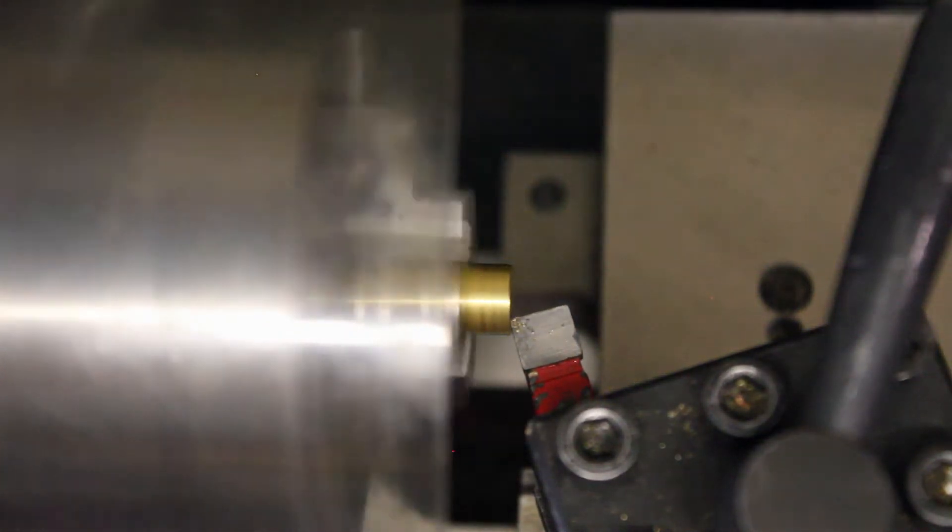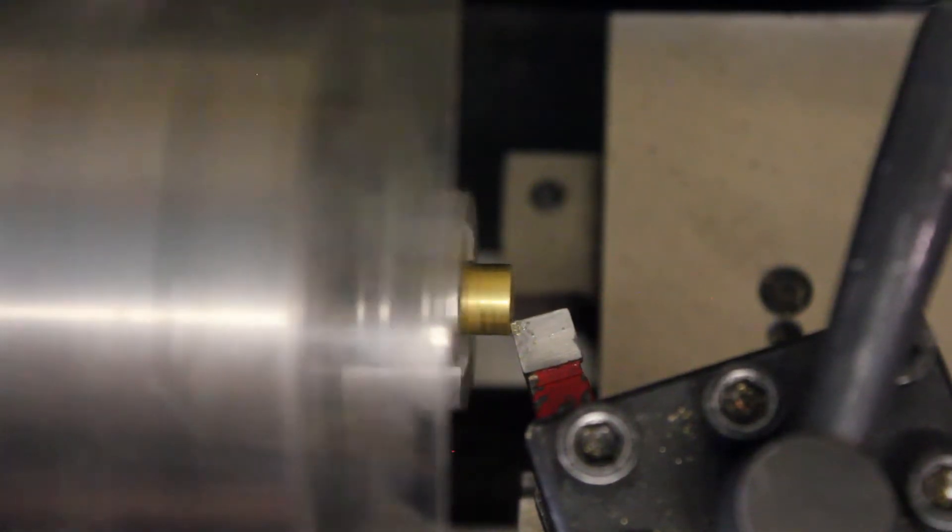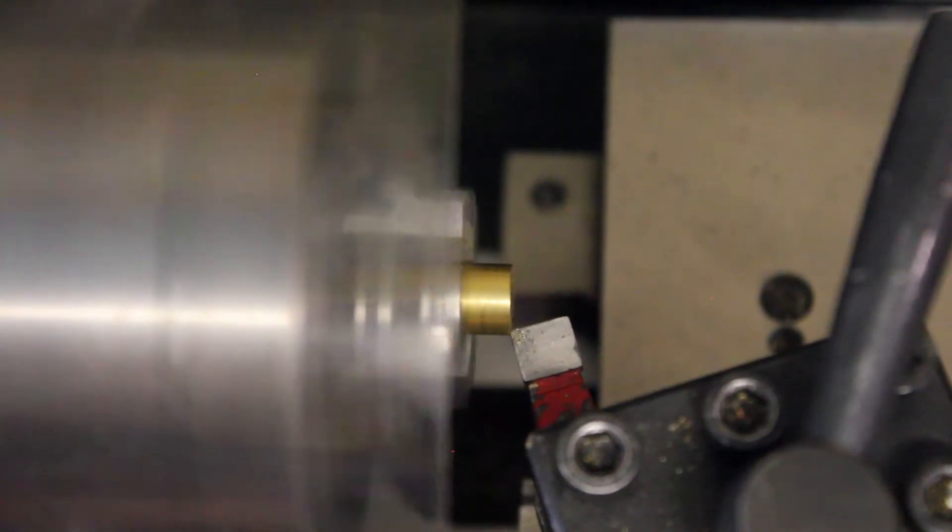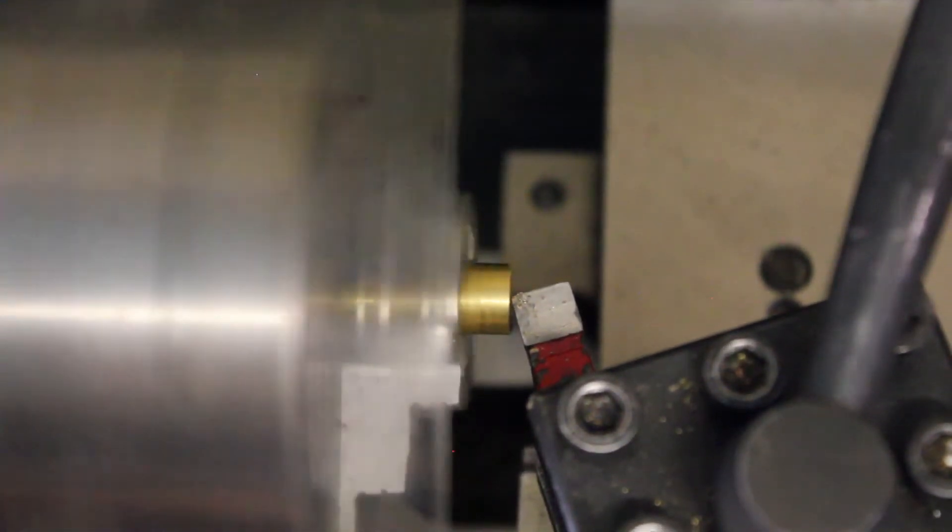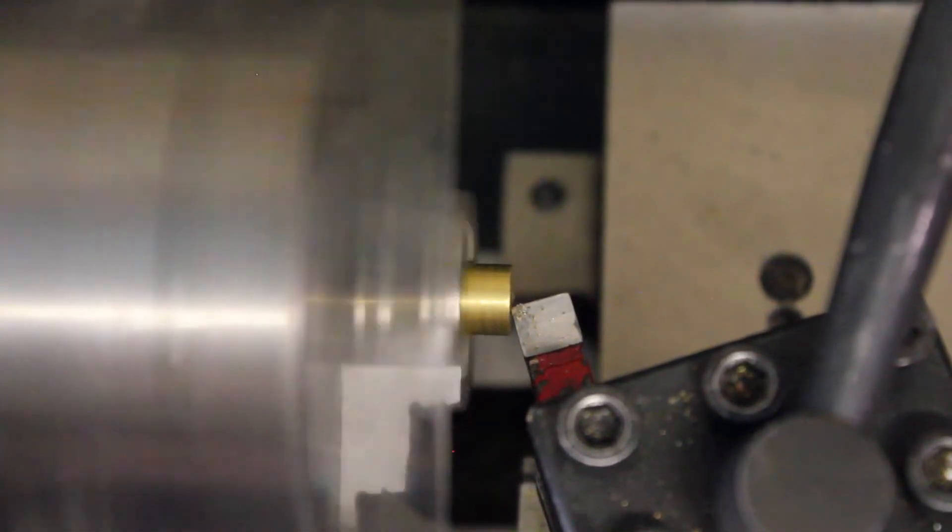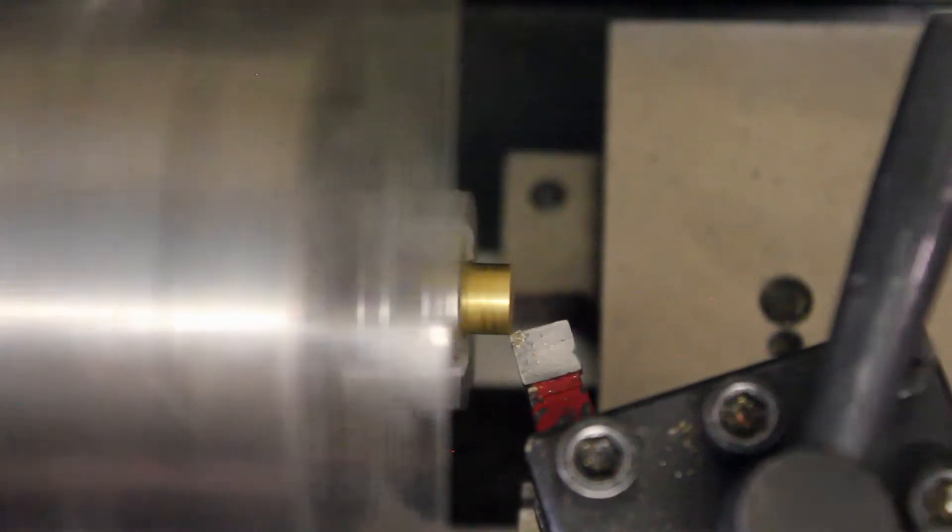And then you can come in and just barely touch the edge of your part. You'll know whenever you touch because you'll probably hear it and you'll also see a little chip come off of your tool. So once you're just barely touching the surface, you can feed in and out to get all of the highest points on the end of your stock.